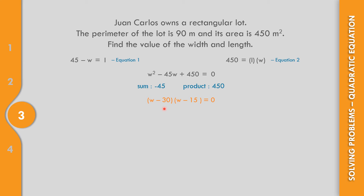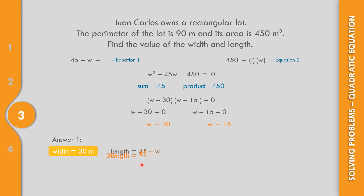Let us check: negative 30 times negative 15 is 450, and their sum is negative 45. So the factors are (W minus 30)(W minus 15) equals 0. From W minus 30 equals 0, W equals 30. From W minus 15 equals 0, W equals 15. Both are valid answers. If the width is 30, then the length equals 45 minus 30, which is 15 meters.